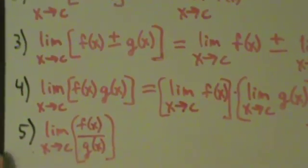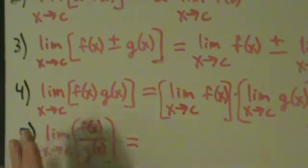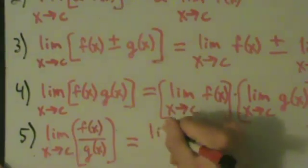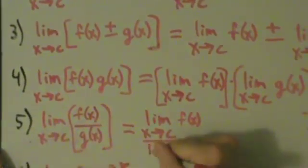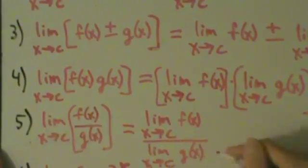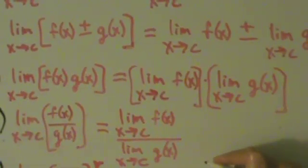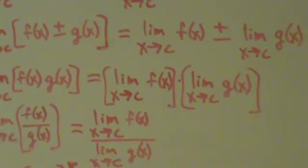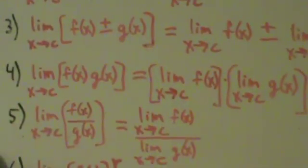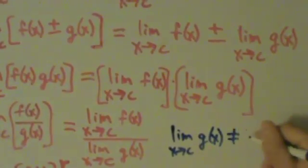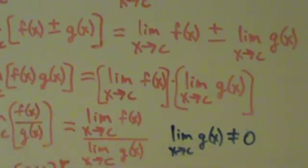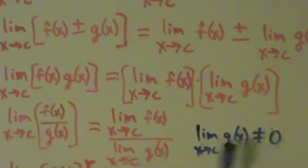Property 5: the limit as x approaches c of f(x) divided by g(x) equals the limit as x approaches c of f(x) divided by the limit as x approaches c of g(x) — a limit of a quotient equals the quotient of the limits. There is a restriction here: you can never divide by 0. So in order for property 5 to make sense, we need the limit as x approaches c of g(x) to not equal 0. If it does equal 0, you can't use this property and will have to figure something else out.